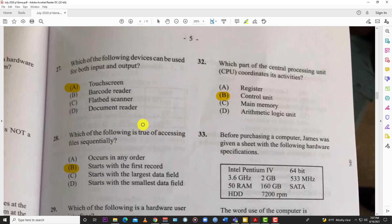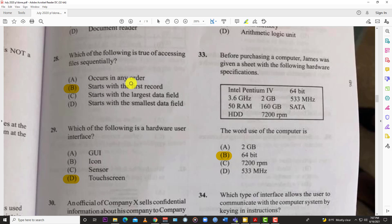Number twenty-eight: which of the following is true of accessing files sequentially? And it starts with the first record, so sequential means as they are put into the record system, they are accessed one after the other, just as they were put in.